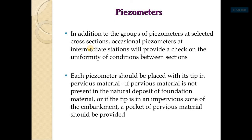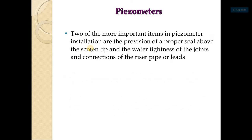Occasional piezometers at intermediate stations provide a check on the uniformity of conditions between sections. Each piezometer should be placed with its tip in pervious material. If pervious material is not present in the natural foundation deposit, or if the tip is in an impervious zone of embankment, a pocket of pervious material should be provided. Two important items in piezometer installation are: provision of a proper sleeve above the screen tip and water-tightness of joints and connections of the riser pipes.